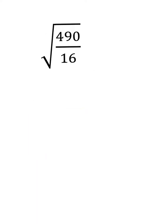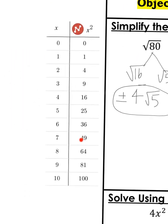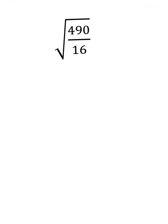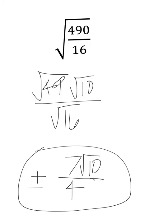Here I have a fraction: the square root of 490 divided by 16. I can factor a 49 out of 490 — 49 times 10. So I have the square root of 49 times the square root of 10, over the square root of 16. The square root of 49 is 7, the square root of 16 is 4, and the square root of 10 stays behind. Don't forget your plus or minus symbol. And that's the answer: plus or minus 7 times the square root of 10, over 4.